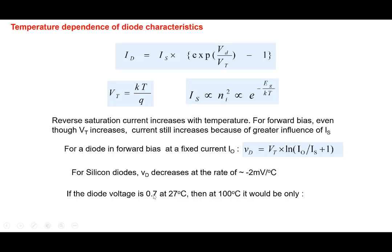For example, if the diode voltage is 0.7V at 27°C (room temperature), at 100°C the diode drop would be 0.7 − 2mV × (100 − 27) = 0.554V. Temperatures of 100°C are encountered in automotive circuits and microprocessors, where due to high power dissipation the internal chip temperature may reach 70–80°C. We need to be aware that the drop across the diode will change with temperature, which will have consequences for other parts of the circuit.